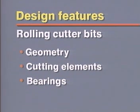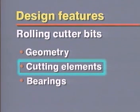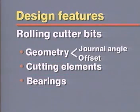The type of cutting action that prevails in a rolling cutter bit is determined by bit geometry, cutting elements, and bearing types. The geometric design features that determine cutting action are the journal angle and the offset.